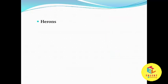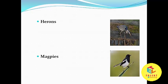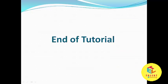Which is the next alphabet? It's H. H for herons. And it is a heron. Which is the next? Yes, it's M. M for magpies. So it is magpie. Here we have learned the birds with alphabets. Thank you.